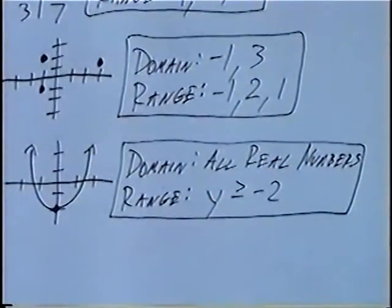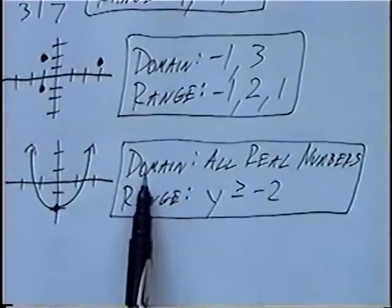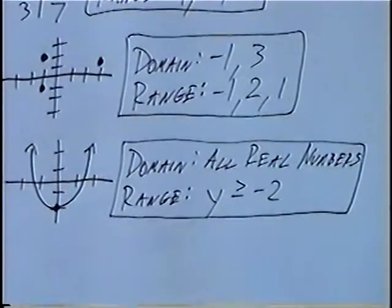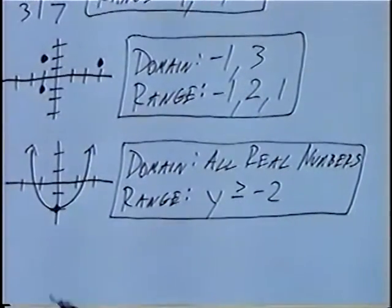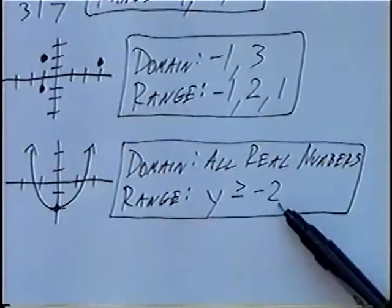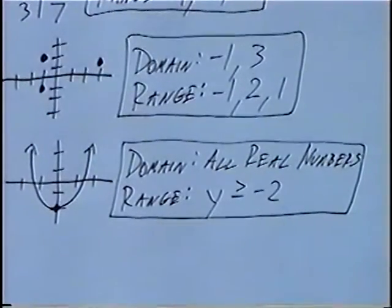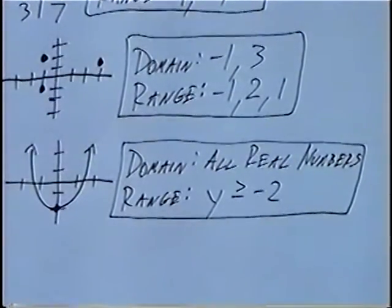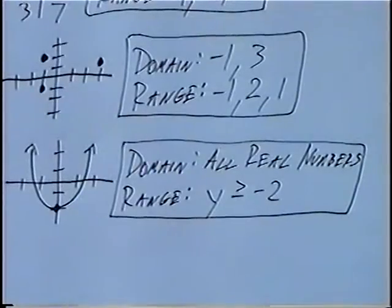So again, the domain — every X-number is on the graph, so it's all real numbers. And the range — the smallest Y-value is negative 2, so all Y-values have to be greater than or equal to negative 2.